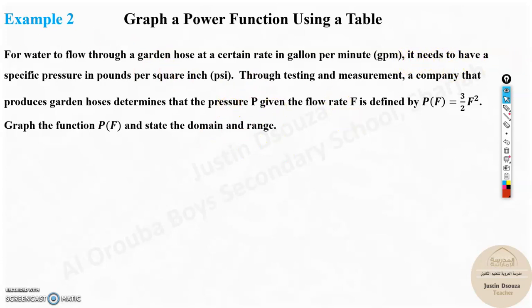It needs to have a specific pressure in pounds per square inch. If water has to flow in that garden hose, there needs to be a pressure, so they both are related to each other.